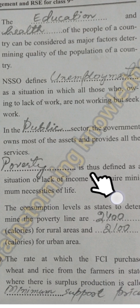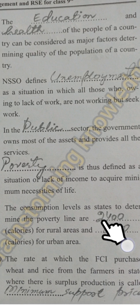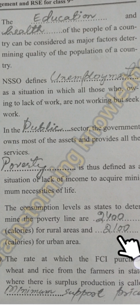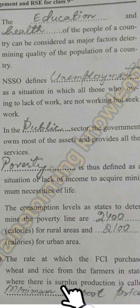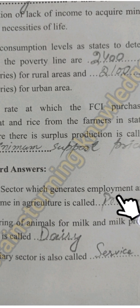Eighth, poverty is defined as a situation of lack of income to acquire minimum necessities of life. Ninth, the consumption levels used to determine the poverty line are 2400 kilocalories for rural areas and 2100 kilocalories for urban areas. Tenth, the rate at which the FCI purchases wheat and rice from farmers in states where there is surplus production is called Minimum Support Price.